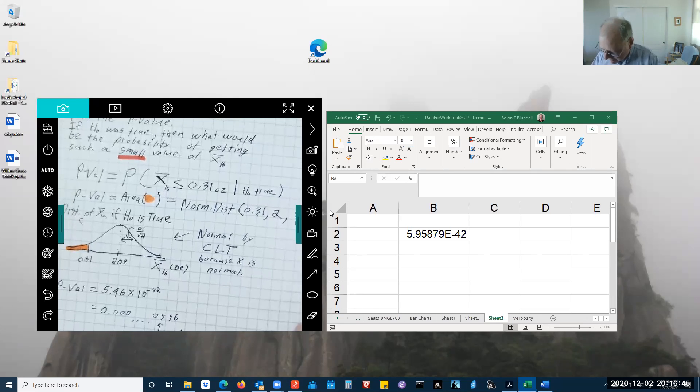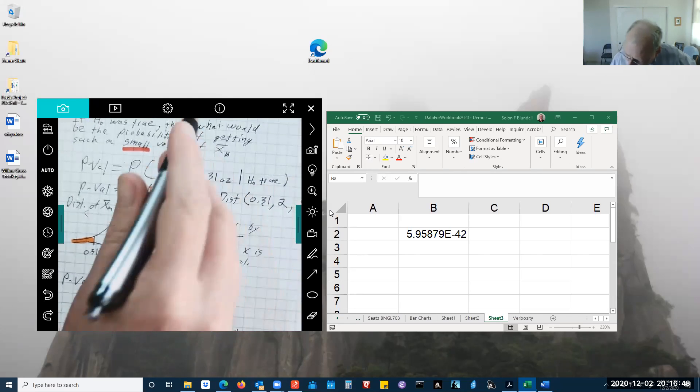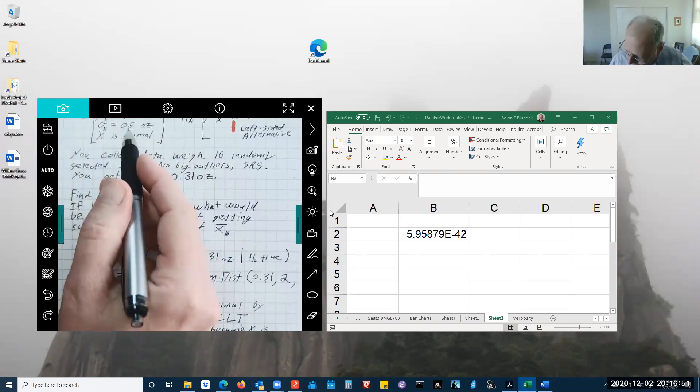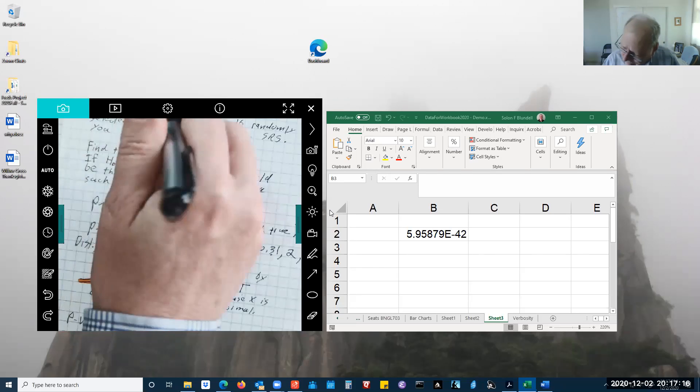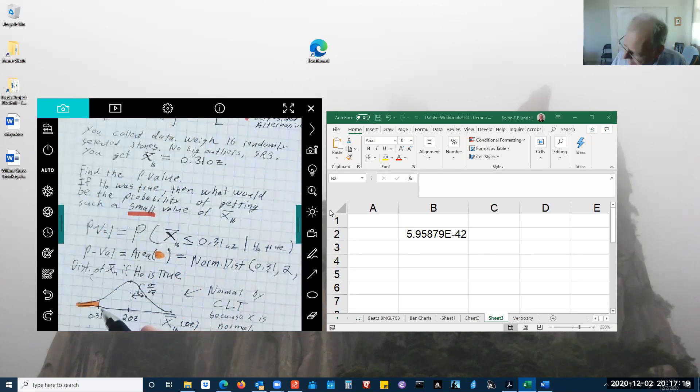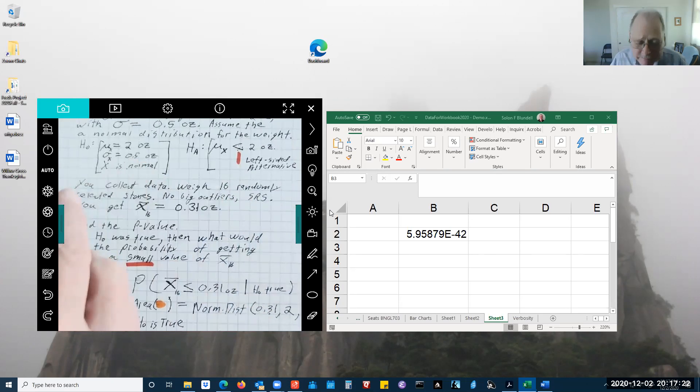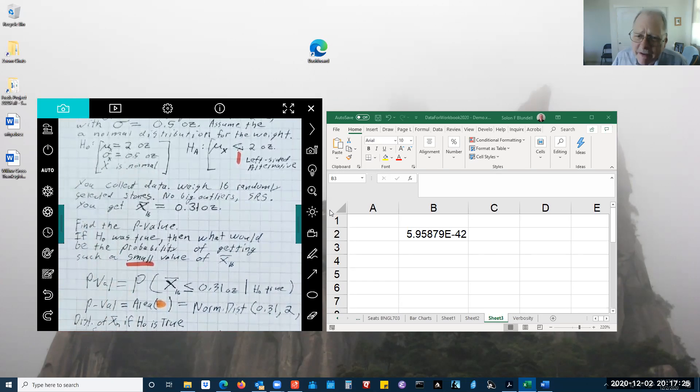So what you've figured out here is that if I was right about this distribution and you got one of these samples every few seconds for the next few billion years, for the rest of the life of the universe, you might get so lucky again once. So it really probably did not happen just by chance. My hypothesis was wrong.